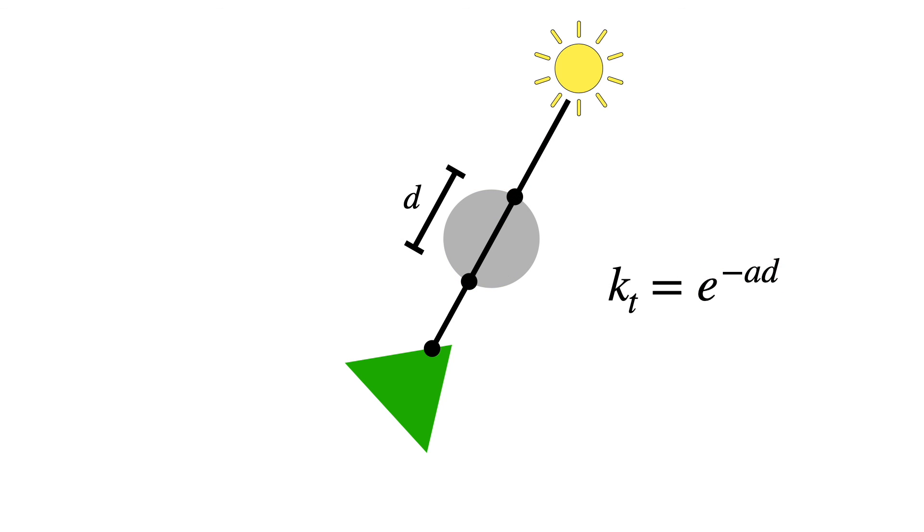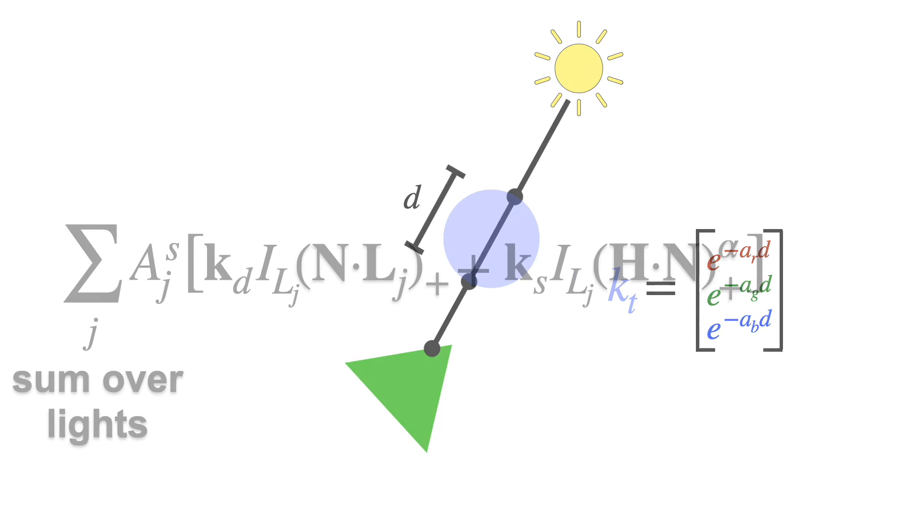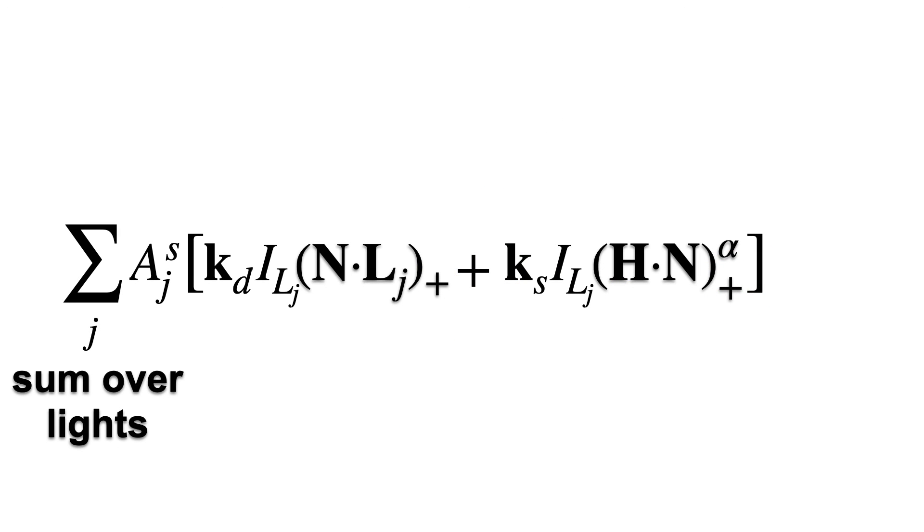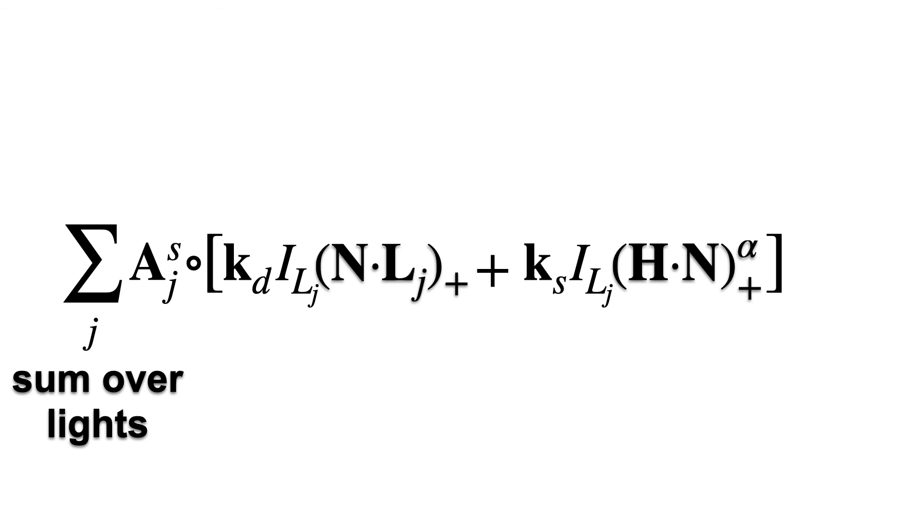Other transparent objects, like glass and water, attenuate volumetrically, and use equations like this. Here's the color version. The shadow attenuation term is now a vector that multiplies element-wise.